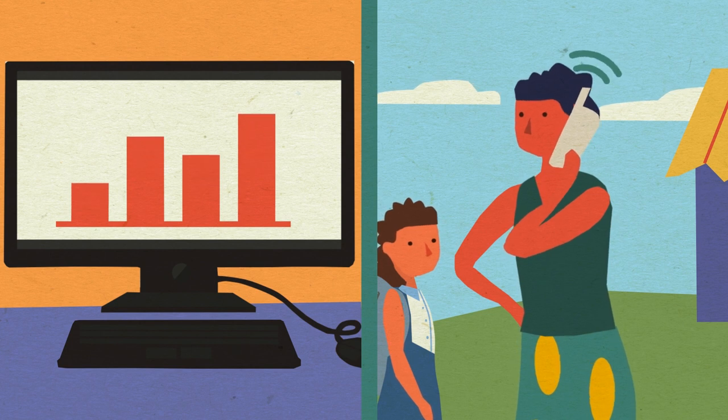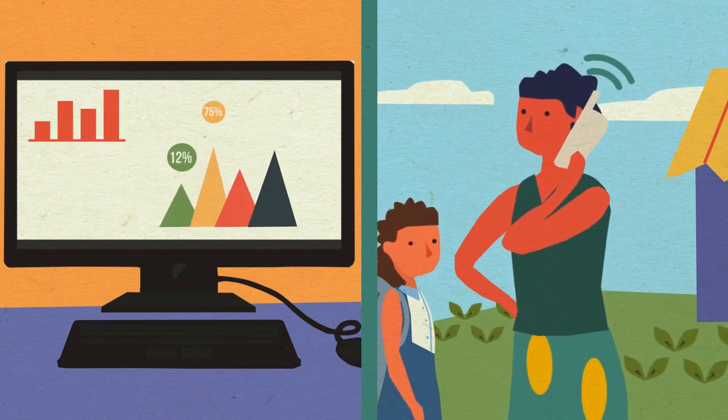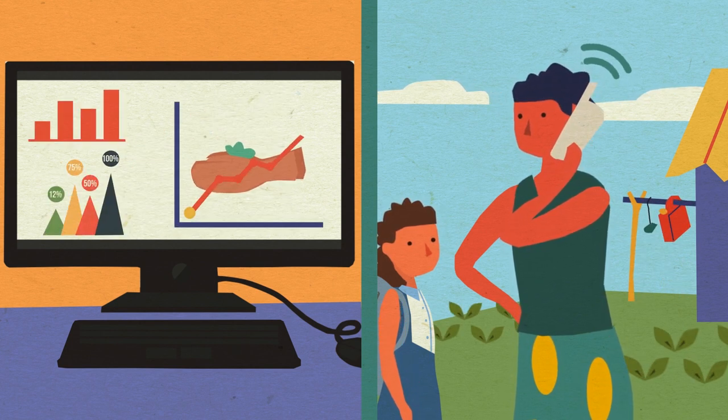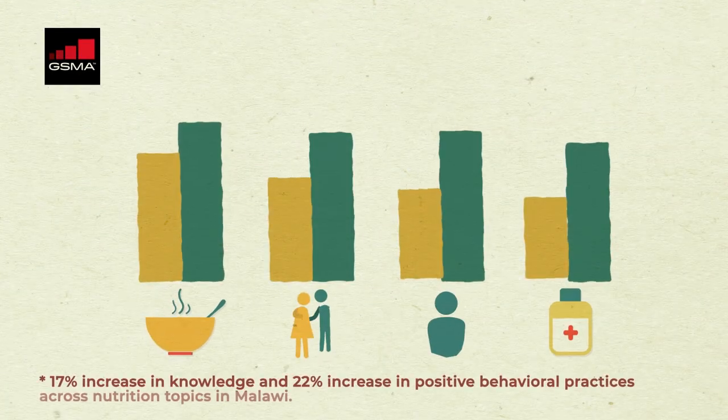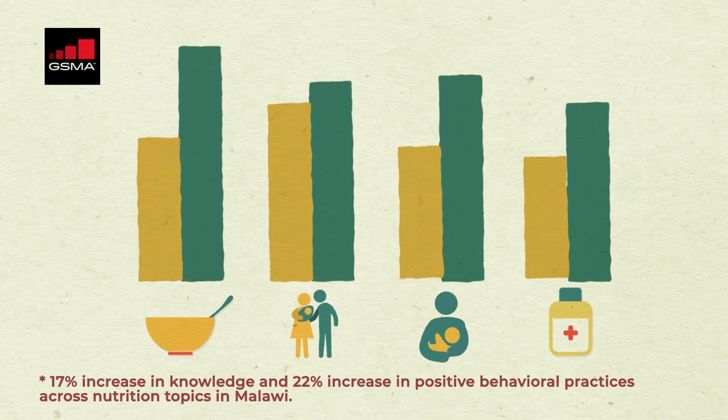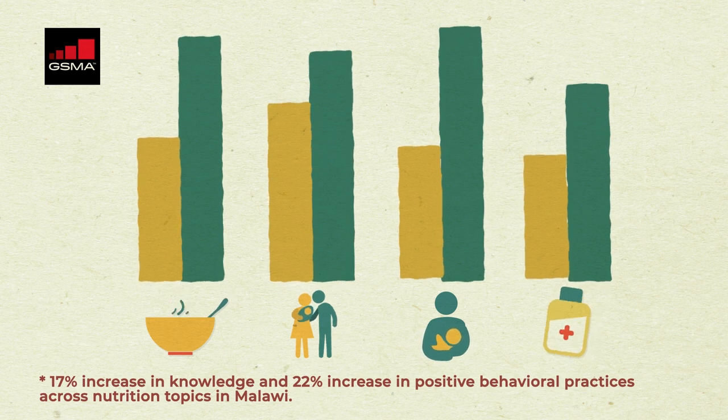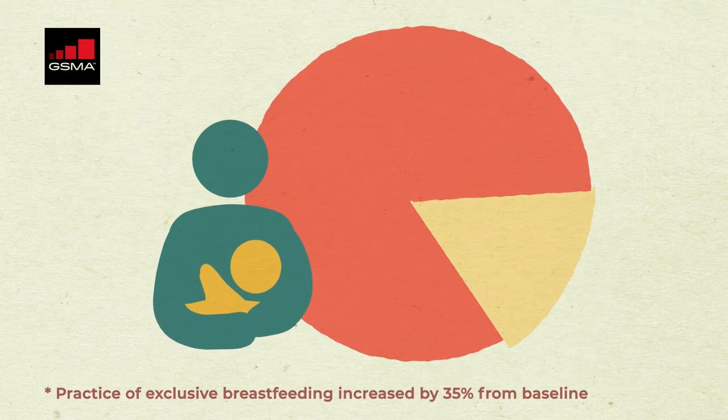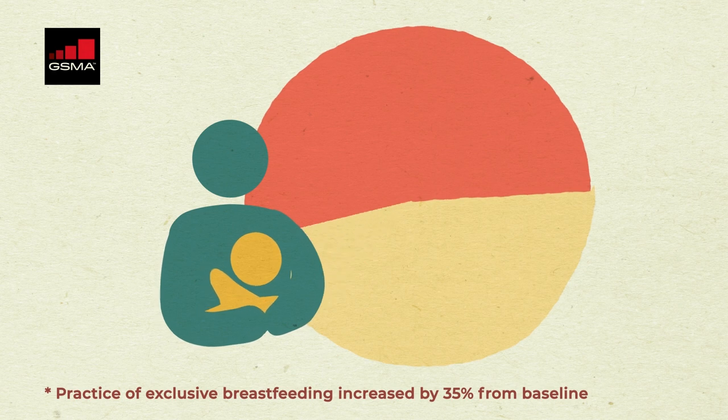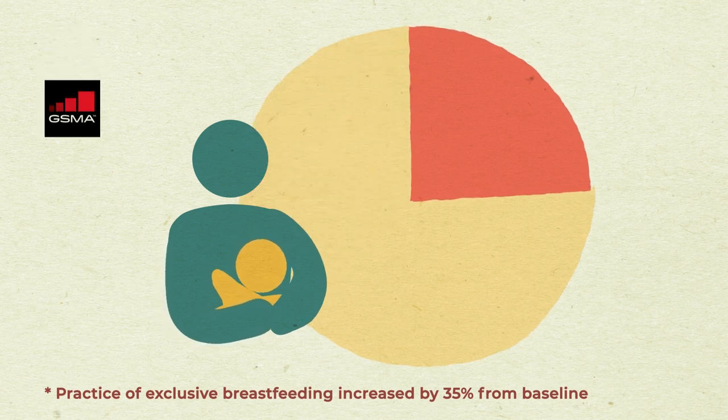Usage data is used to understand user experience, knowledge retention and even attitude and behaviour change. The 321 service is a proven model of social behaviour change communication. Independent evaluations have shown that information accessed through the 321 service improves both knowledge and positive practices.